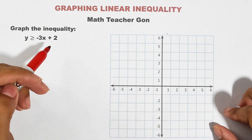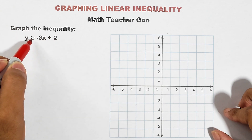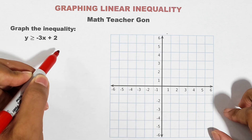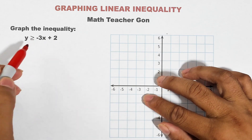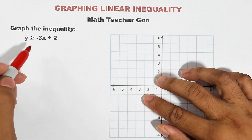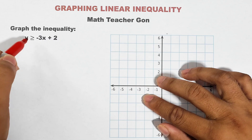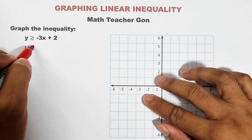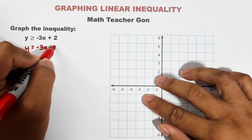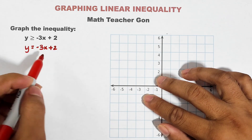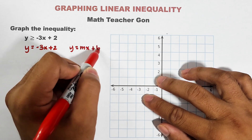So what we have here is the first example. We need to graph the inequality y is greater than or equal to negative 3x plus 2. So how are we going to graph this inequality in a Cartesian plane? First, we need to ignore the inequality symbol and convert this into an equal sign: y is equal to negative 3x plus 2.